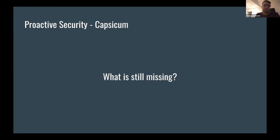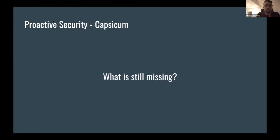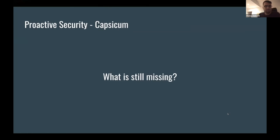On how Capsicum interacts with openat and empty path syscalls: the capability is the file descriptor itself — to the particular file or to the directory containing the file. To open a file in capability mode you need a descriptor to the directory containing it, or you ask a process that has access to open it and pass the descriptor through, for example via a Unix domain socket.